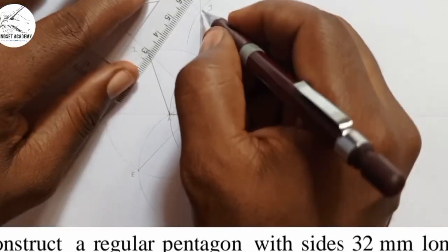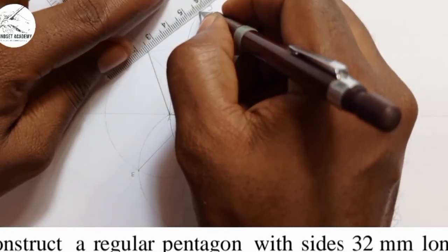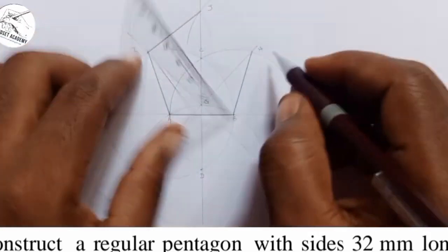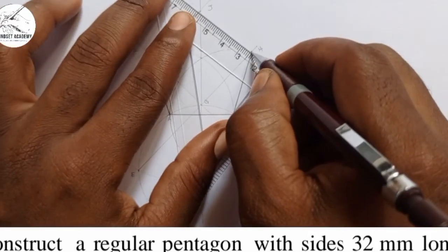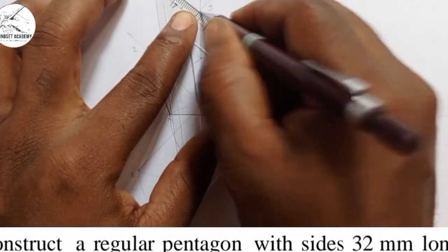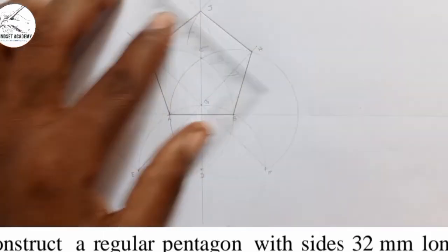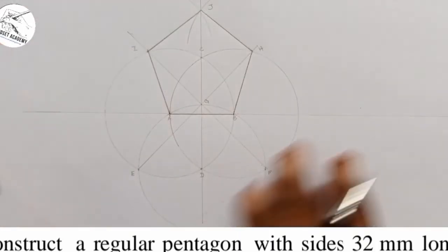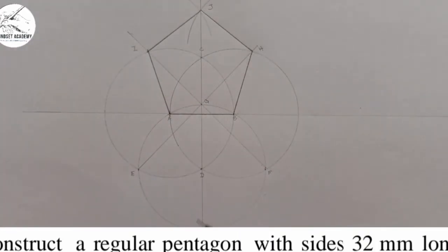And I am going to join J and I, and also J and H. So, we have done that. We have constructed the pentagon.